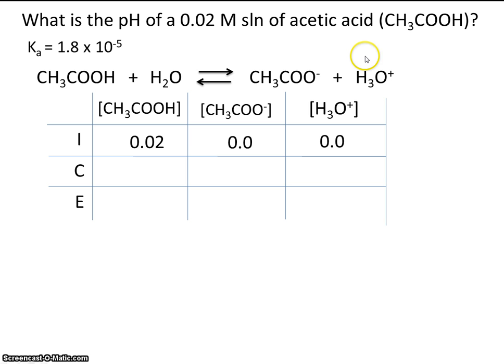So if we start with zero, we would expect that the concentration of the products would increase, and the concentration of the reactant would decrease. How much will it increase and decrease by? Well, the coefficients are 1 to 1 to 1. So we'll just say they'll go up or down by x. So this should go down by x. And the two products should increase by a value of x.